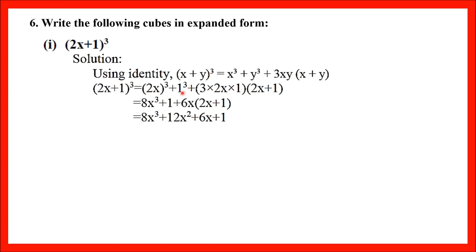So x³ gives us (2x)³, y³ gives us 1³. Similarly, 3xy becomes 3 × 2x × 1, because x equals 2x and y equals 1. Then for x + y, I write 2x in place of x and 1 in place of y. Now simplify: (2x)³ = 8x³, so I write 8x³. Then 1³ = 1.